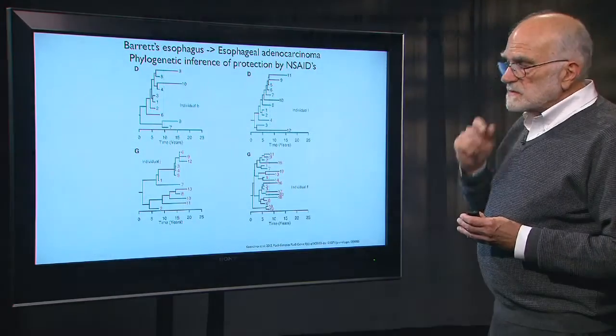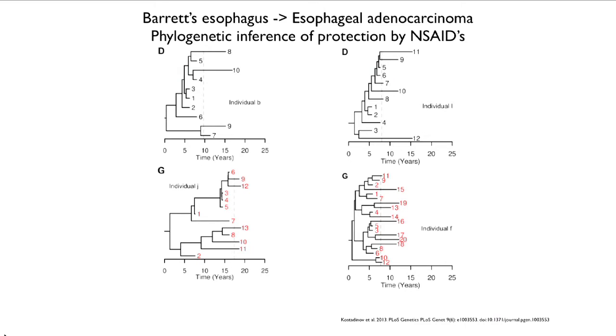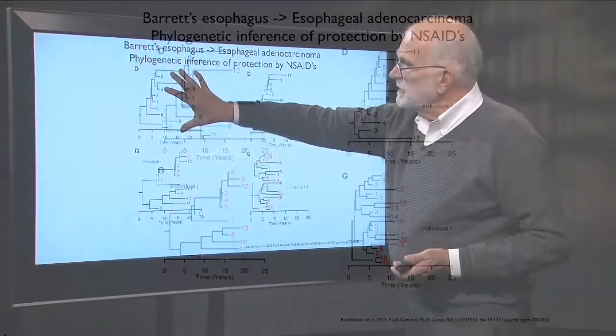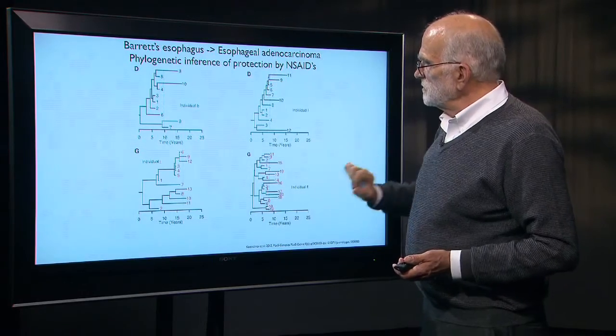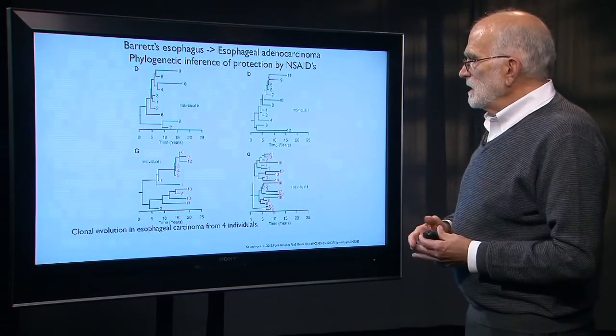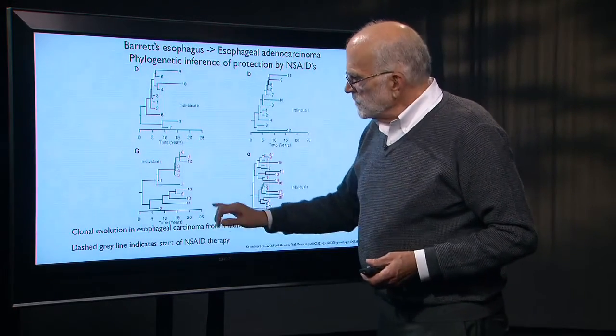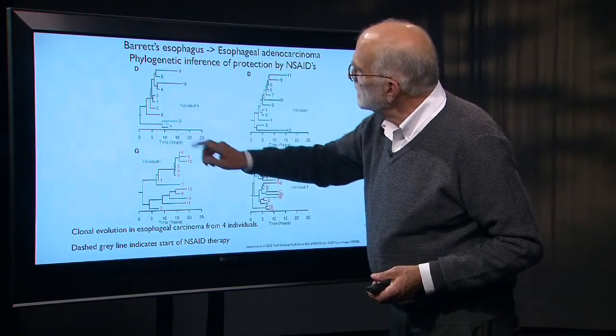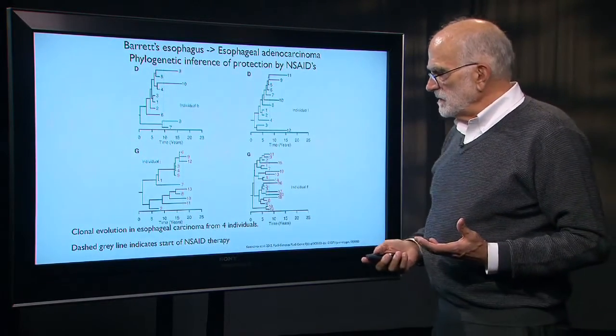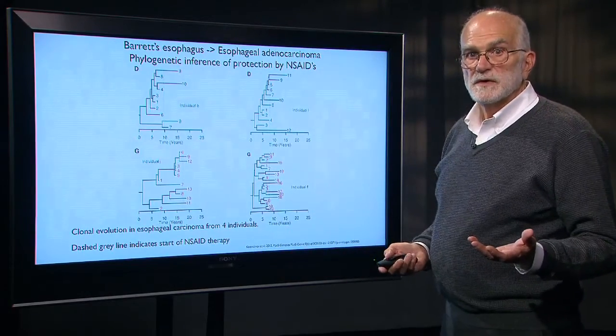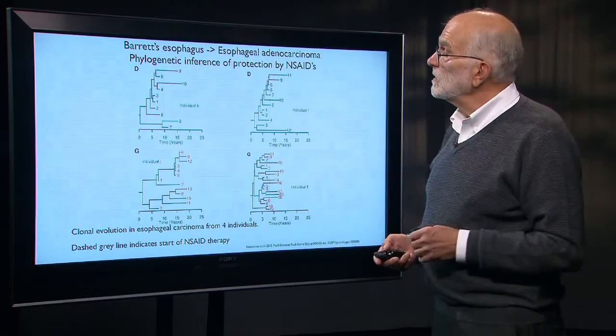Now, let's take a look at a case where a fairly sophisticated statistical reconstruction of evolution gave some insight into the efficacy of therapy. These are esophageal adenocarcinomas and these are for different individuals. So this is one individual here, that's the phylogenetic tree of that cancer in that individual. These are sample numbers. This is another individual with its phylogenetic tree and so forth. The dashed gray line right here and right here and right here and right here indicates when therapy was begun with a non-steroidal anti-inflammatory drug. So that would be something like naproxen or perhaps a statin.